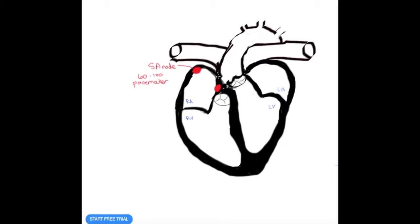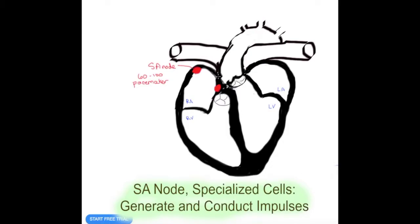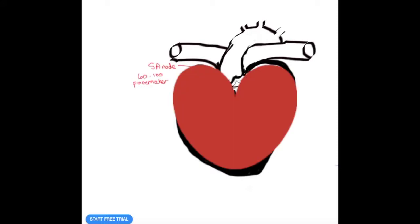It is found in the right atrium and these are specialized cells in that they can generate and conduct impulses without needing external stimulus. That means that if you were to take this heart out of the body it can still beat.